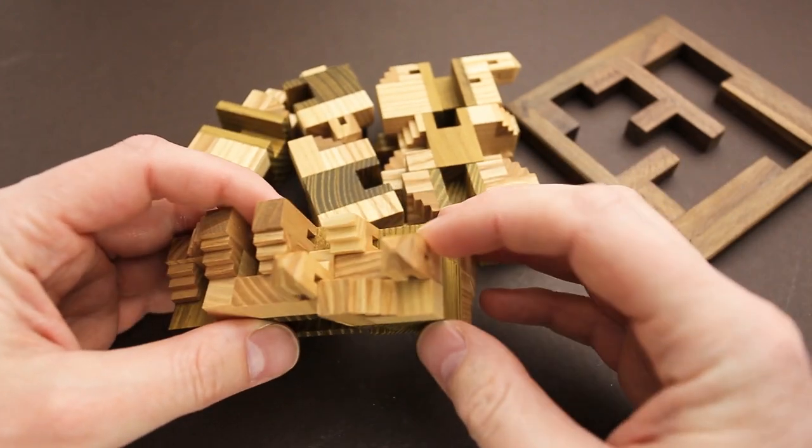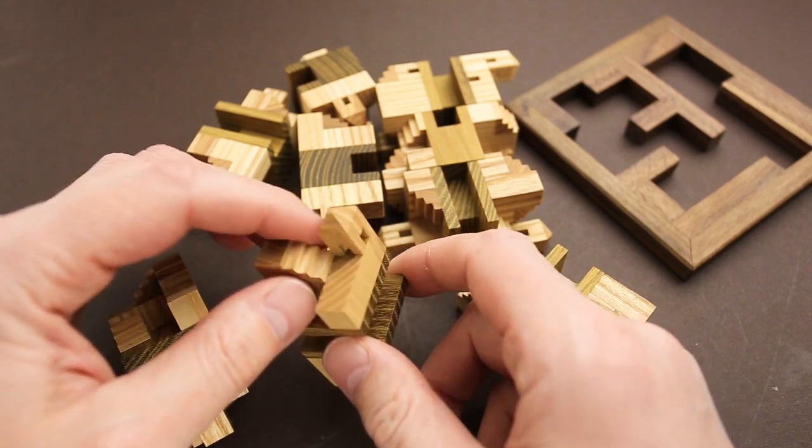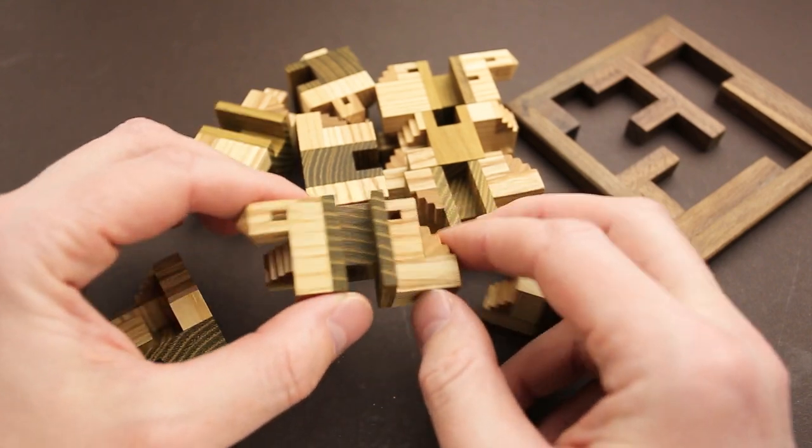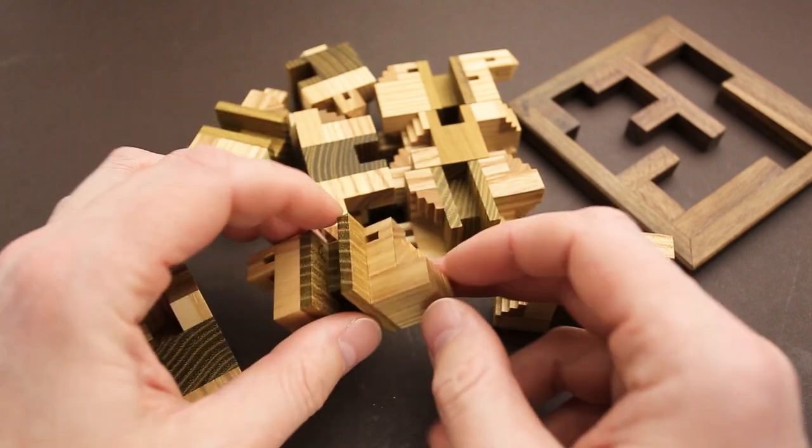This puzzle has nine unique parts. As you can see, each piece has a unique shape and it has two sides. On each side, you will find a small part of the castle.